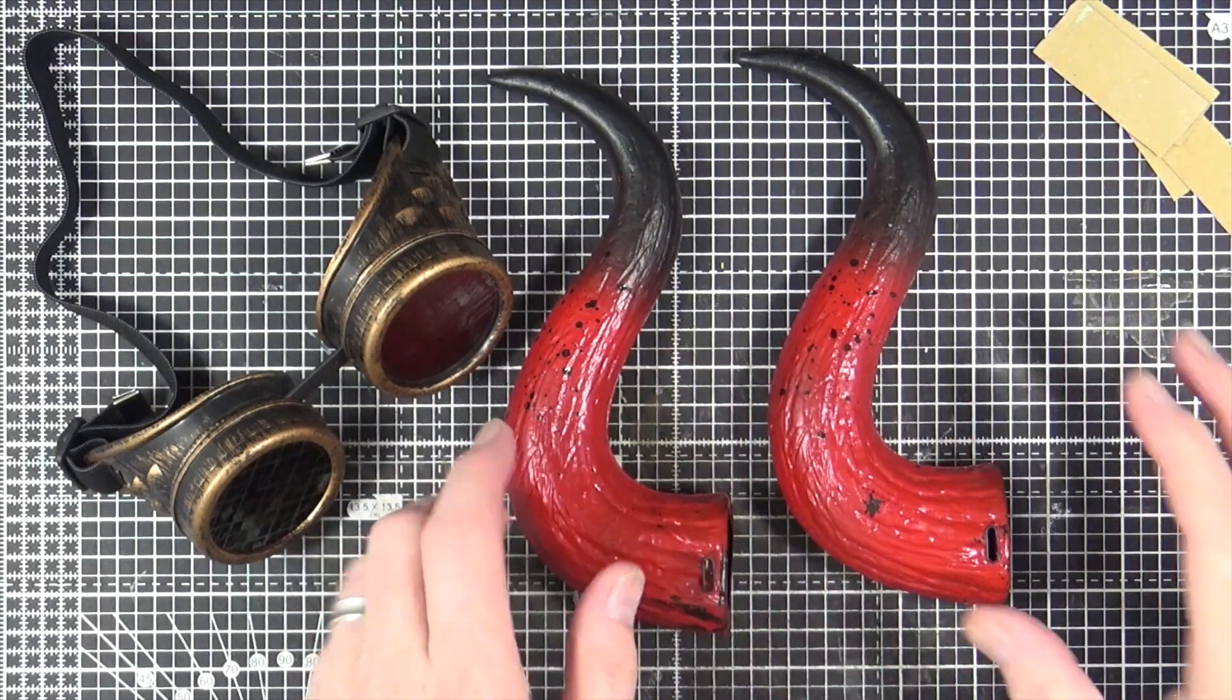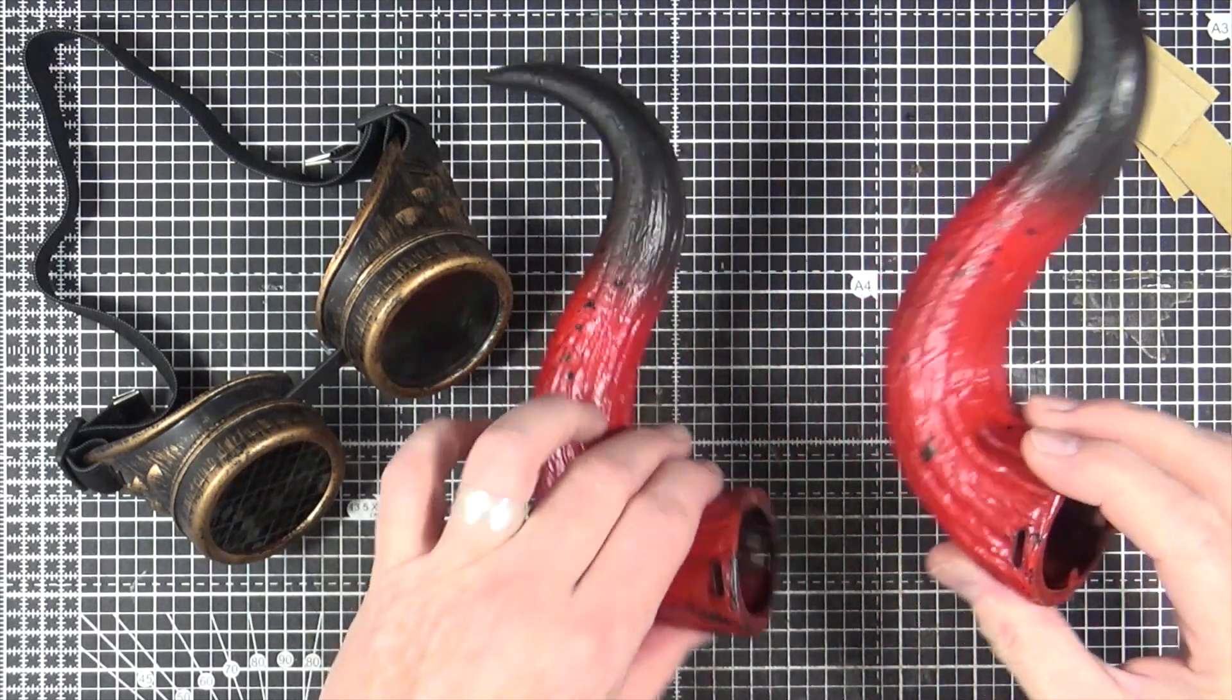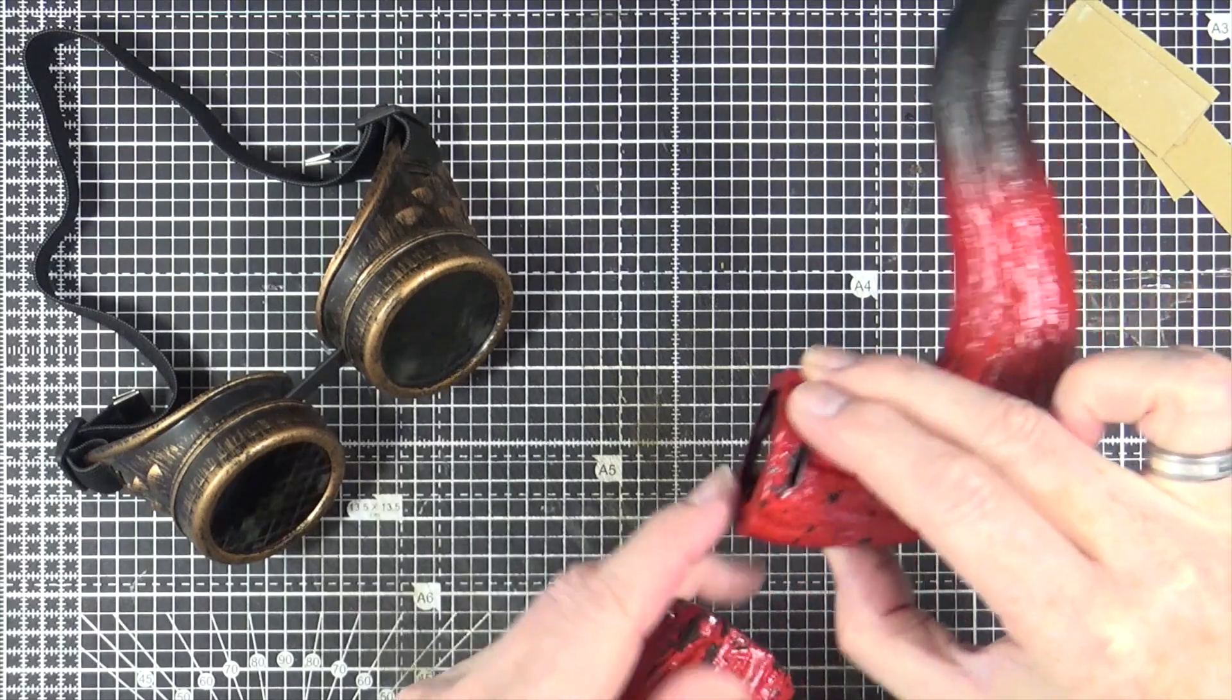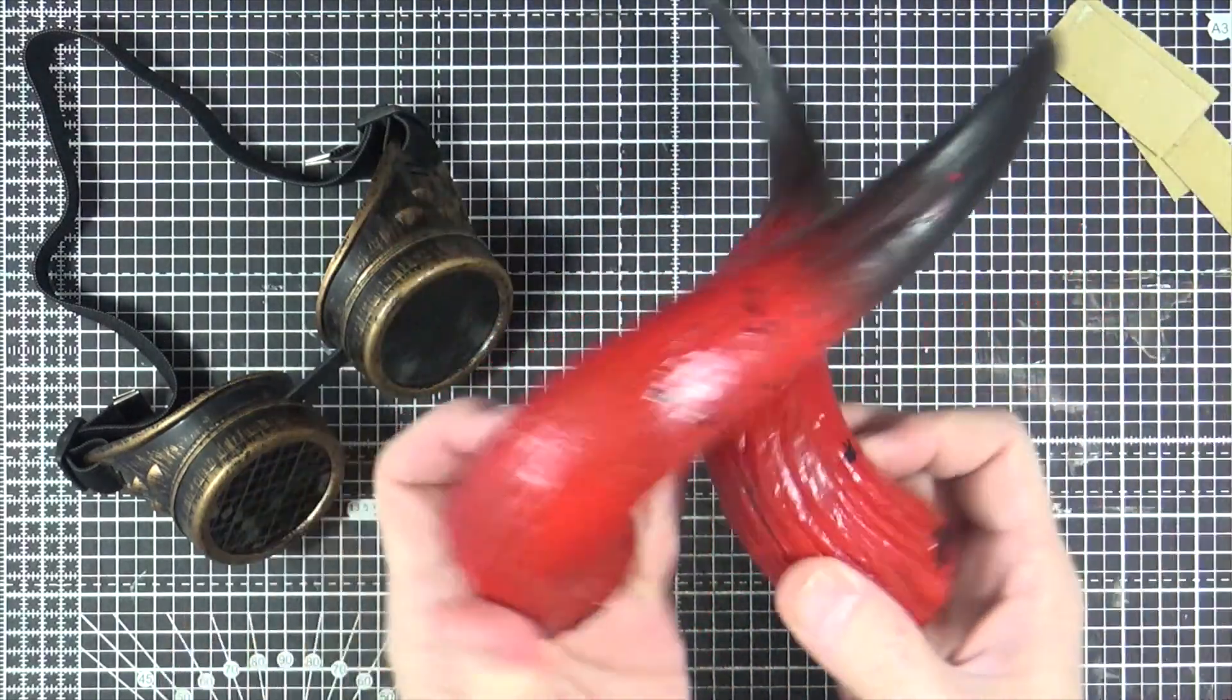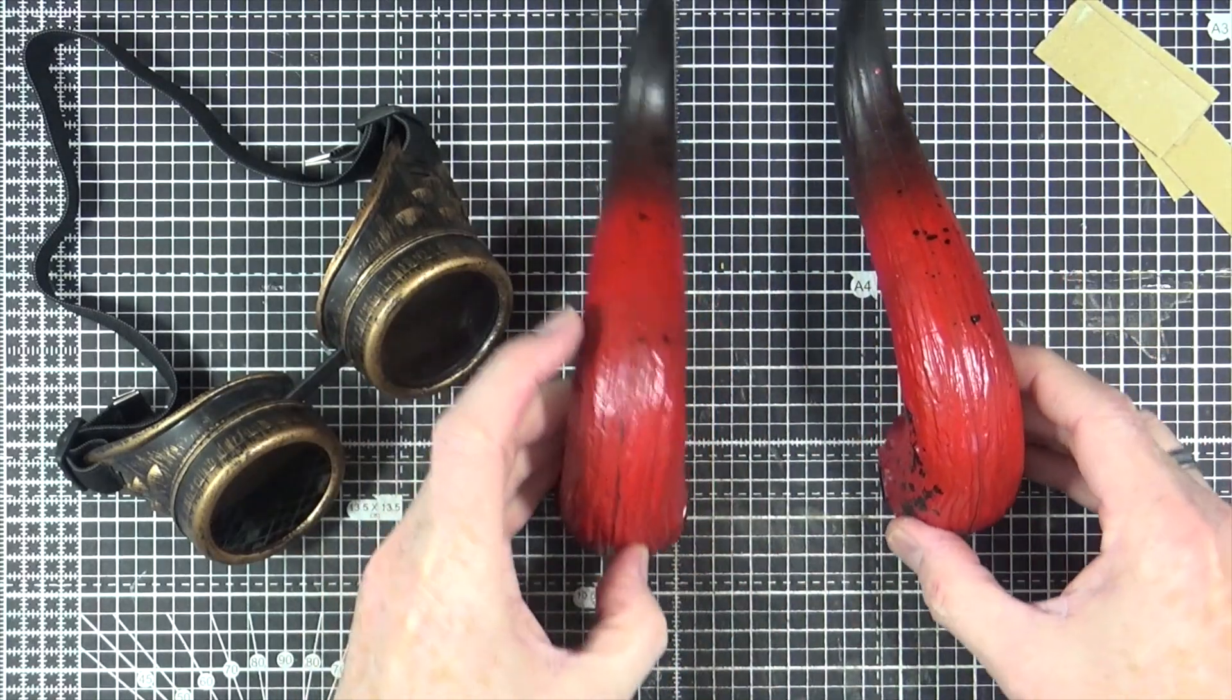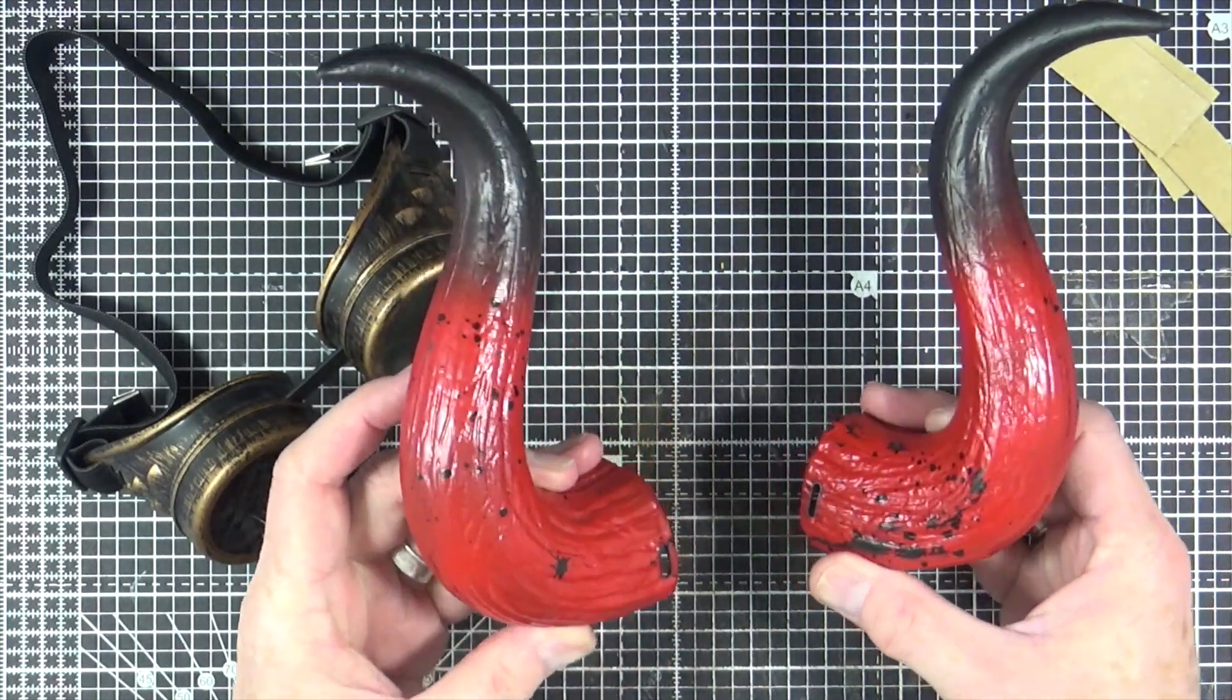Okay, so these are the plastic horns. Now these came on a piece of elastic which obviously was supposed to go around your head so that they rested on your forehead and stuck up like that.